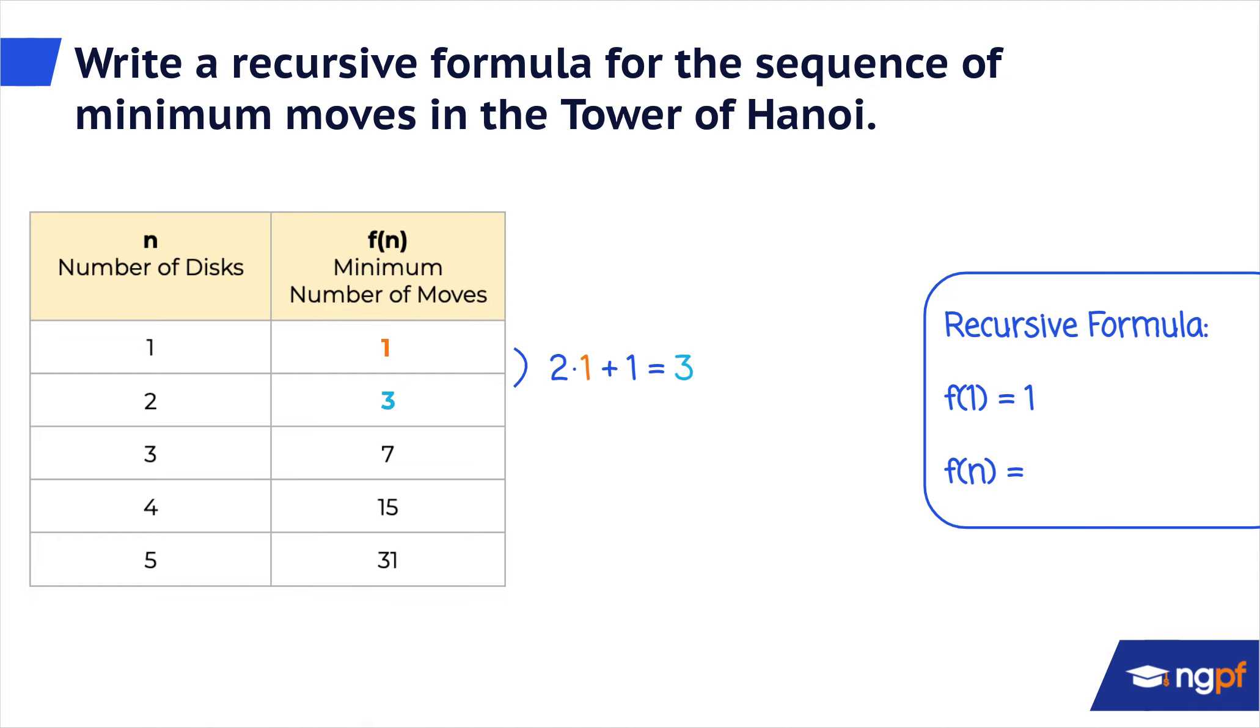Let's walk through how to find the second term using the first term. The first term is 1. We multiply it by 2 and add 1. This gives us the second term, which is 3.